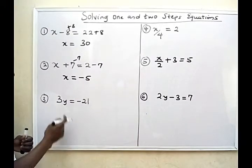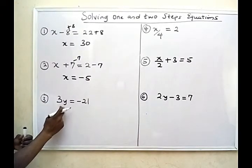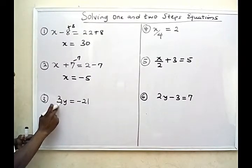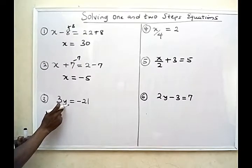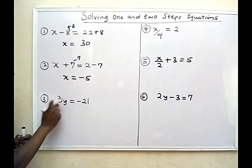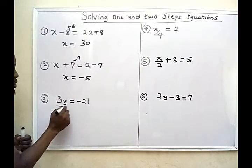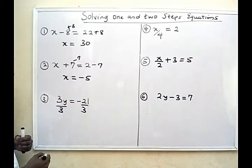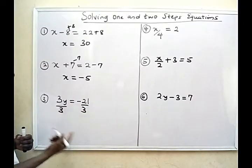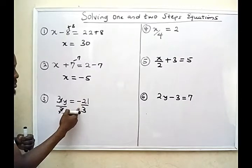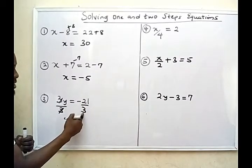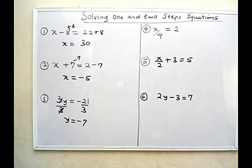For the third question, 3y simply means 3 times y. What I want to do is find the value of y, which is the unknown. I don't want 3 to be here — the coefficient of y is 3 — so I need to divide both sides of the equation by 3. 3 divided by 3 cancels, and y will now be negative 21 divided by 3, which gives me 7. So my answer would be negative 7.